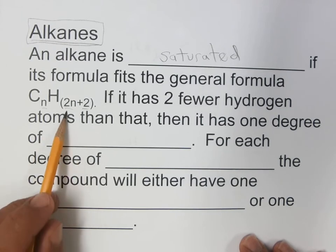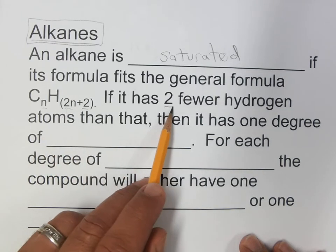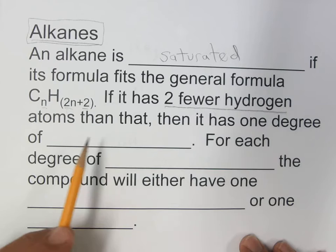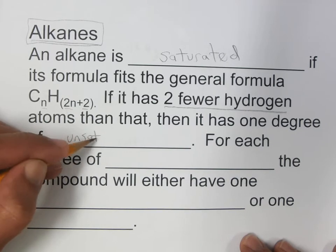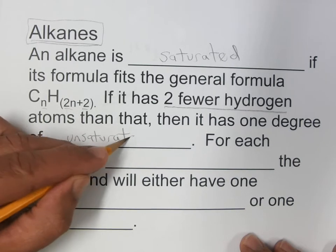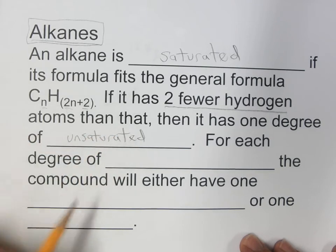Now, what if it doesn't fit this formula? If it has two fewer hydrogen atoms than this formula would suggest, then it has one degree of unsaturation.